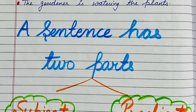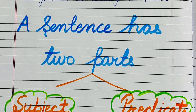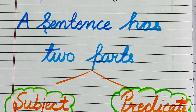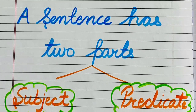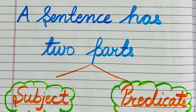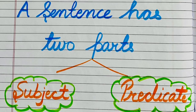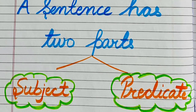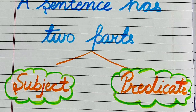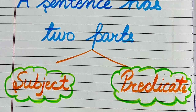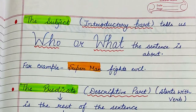A sentence has two parts. Now we will understand these parts in detail. The first part is known as the subject and the second part is known as the predicate.